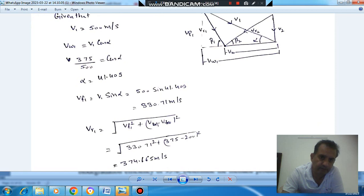Then VF1 we can calculate from V1 sin alpha, so that will be 33.71 m per second. And now we can figure VR1 also. VW1 minus blade velocity.